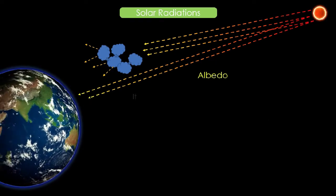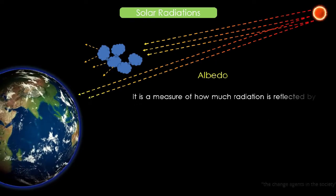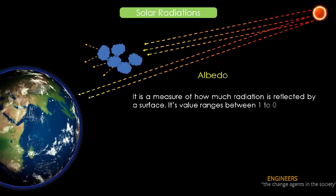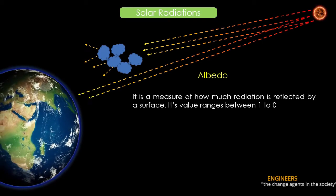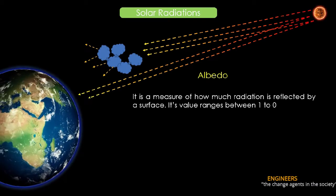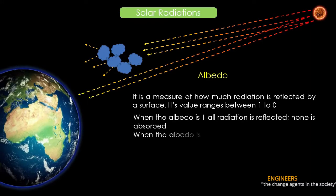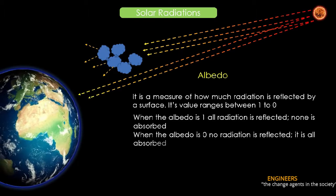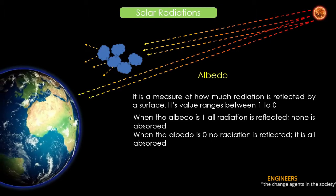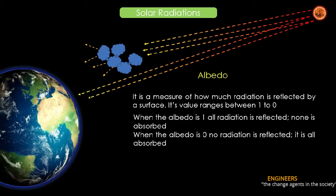Albedo: It is a measure of how much radiation is reflected by a surface. Its value ranges between 1 to 0. When the albedo is 1, all radiation is reflected, none is absorbed. When the albedo is 0, no radiation is reflected, it is all absorbed.